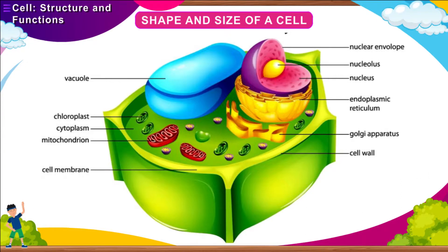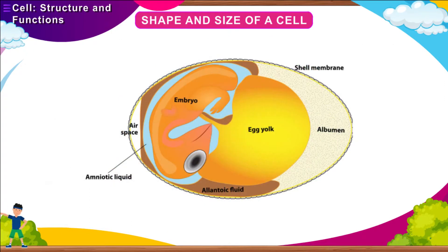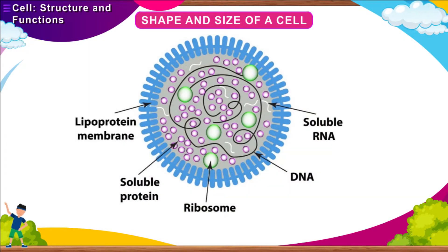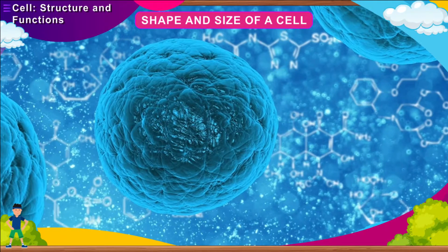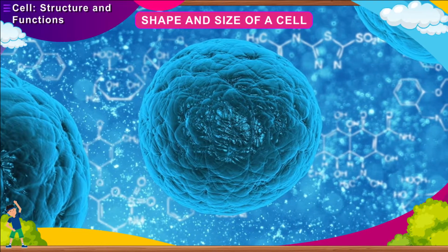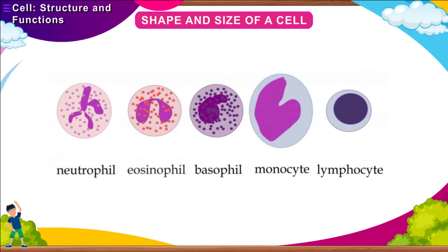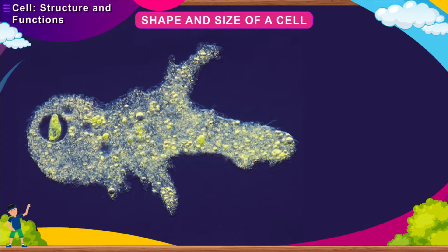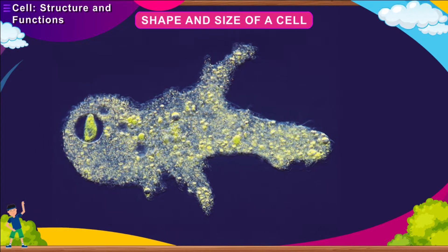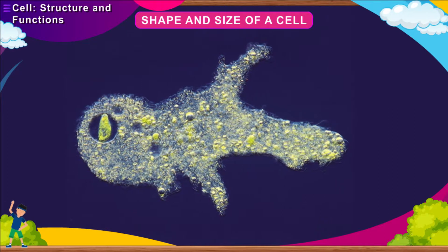Plant cells have a thick cell wall so that they can provide strength to the plant. The cells in plants which store food are larger than normal ones. The egg of a bird is a single cell. The largest cell is an ostrich egg. The smallest cell is a type of bacteria called mycoplasma. A typical cell measures around 0.02 mm in diameter. There are some cells like WBCs which do not have a fixed shape. Amoeba, an irregular single-celled organism, has pseudopodia which keeps changing its shape.